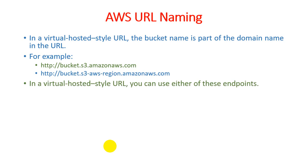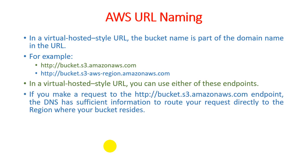In a virtual-hosted-style URL, you can use either of these endpoints. If you make a request to http://bucket.s3.amazonaws.com, the DNS has sufficient information to route your request directly to the region where your actual bucket resides. In Amazon's architecture there are different sections: regions, availability zones, and edge availability zones. Within a region, you can define a particular nearby location.